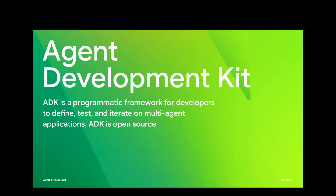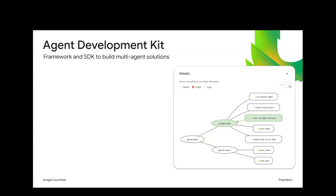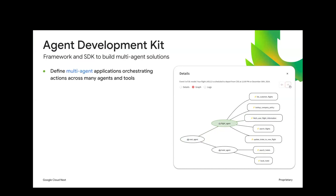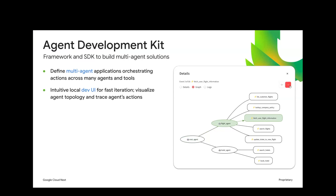The first thing we'll talk about is the Agent Development Kit, ADK. It is a programmatic framework for developers to define, test, and iterate on multi-agent systems. It's fully open source - everybody can go and use it through GitHub, and you can also contribute back to the codebase. This whole thing is built for multi-agent, which we believe is the right investment right now. We also built a very intuitive local development UI for fast iteration - you can spin up this UI and see how each one of the agents is getting triggered, and trace the entire thing for debugging to improve your systems.